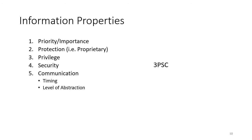All of this information must be managed in a structured and clear way. Information has the following properties: priority or importance, protection based on whether it's proprietary, privilege meaning only certain people may access specific information, security designating the degree of protection, and communication covering timing and level of abstraction. These are known as the 3PSC: Priority, Protection, Privilege, Security, and Communication.